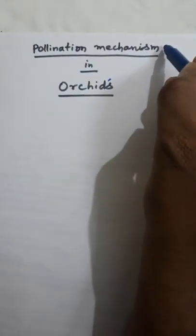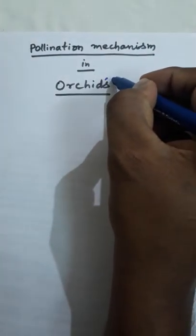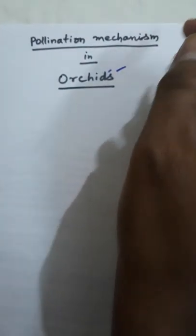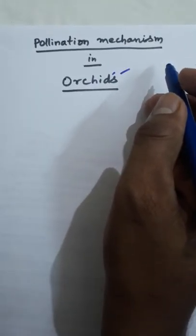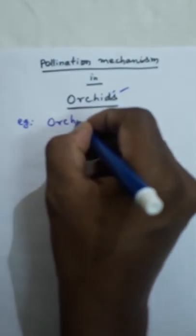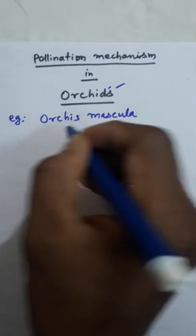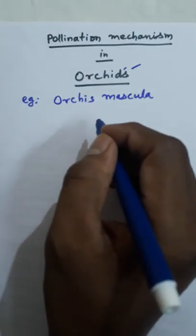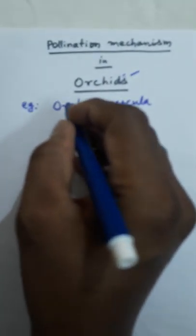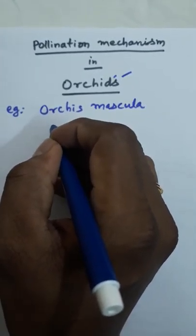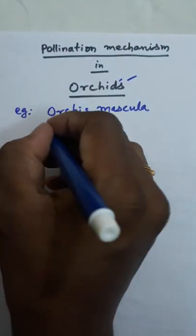Discussion about pollination mechanism process in orchids flower. For example, Orchis mascula. In Orchis mascula, insect pollination takes place. That is called entomophily.